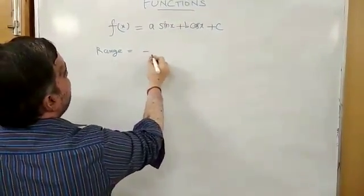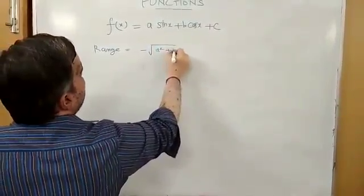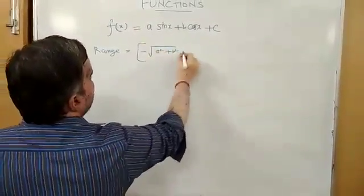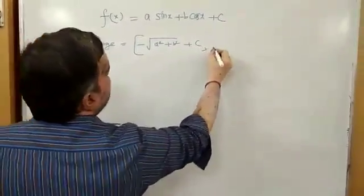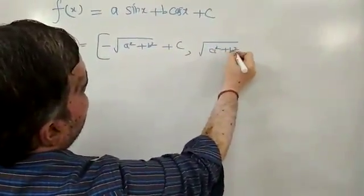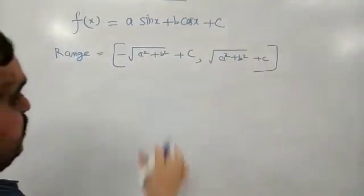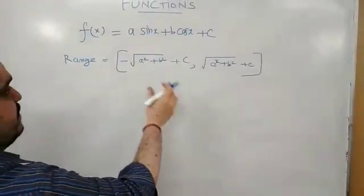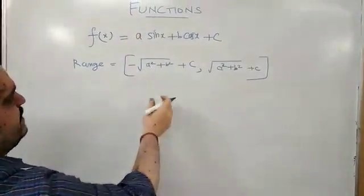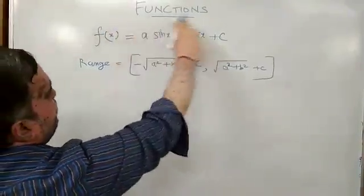I am giving you the shortcut formula. Range equals minus square root of a square plus b square plus c, comma, square root of a square plus b square plus c. It is a useful formula when we find the range of a function if they give this type of format.